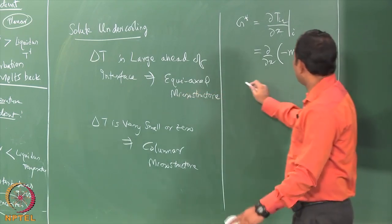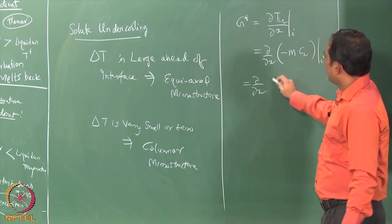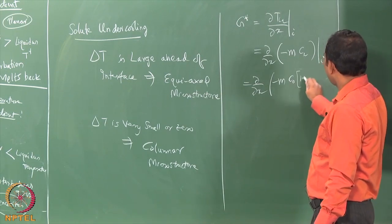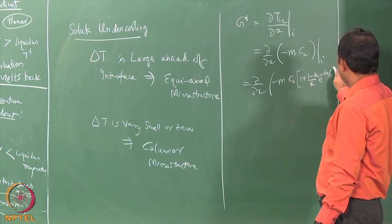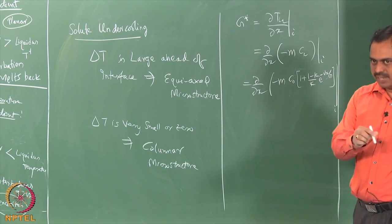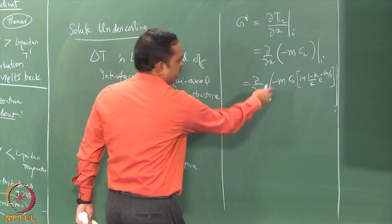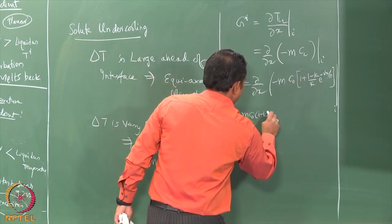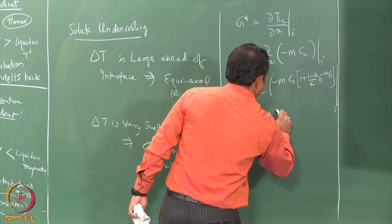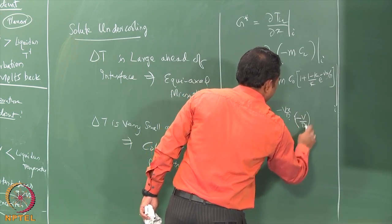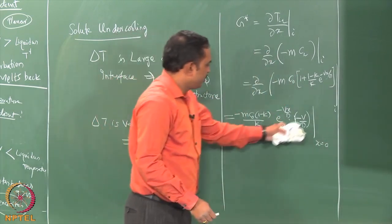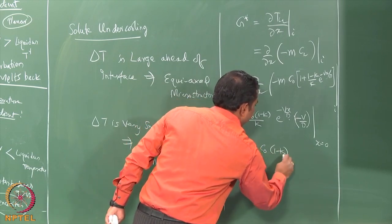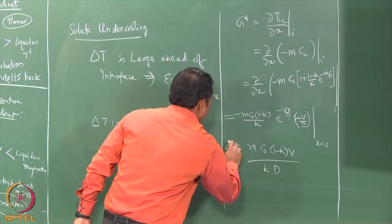Substituting at x = 0: we get −m · C₀ times (1−k)/k — the constant term 1 differentiates to zero — and differentiating the exponential gives −V/D, evaluated at x = 0 where the exponential goes to 1. The two negatives cancel, giving G* = mC₀(1−k)V / (kD). This is the value of G*.